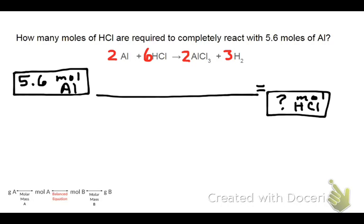Now I'm going to go ahead and look at this. And it looks like I'm going from moles of aluminum, moles of substance A we'll call it, to moles of HCl, moles of substance B. So looking down here in the bottom right hand corner, looks like I'm going from moles of A into moles of B. You see that? So that means that I only need one step. This right here, I need to use my balanced equation.